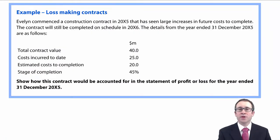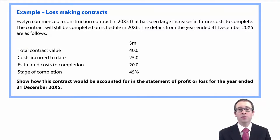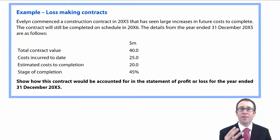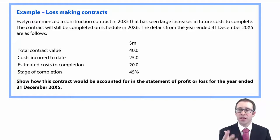Hopefully you've taken a little bit of time to go through there and look at your profitable contracts. Now we're just going to move on and see what happens if we have loss-making contracts. When you are looking at loss-making contracts, that little old lady rears her head again — she's called Prudence — because Prudence states that if we anticipate a loss, then we should recognise that loss immediately. So if we have a loss-making contract, that loss is going to be recognised in full. 100% of that loss is recognised.